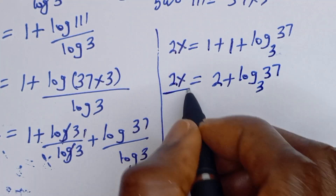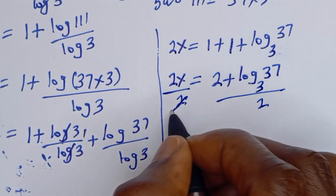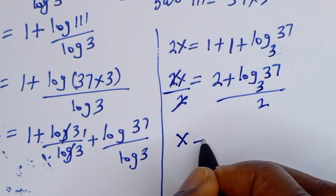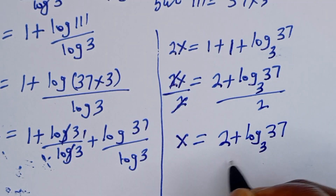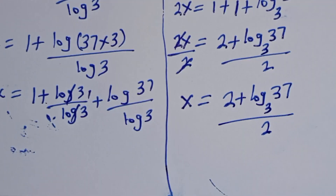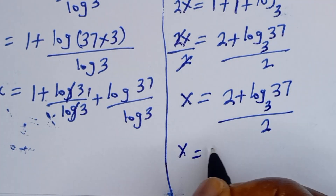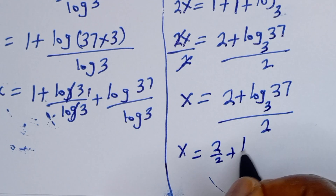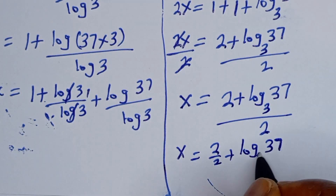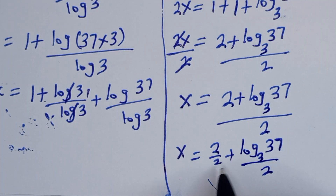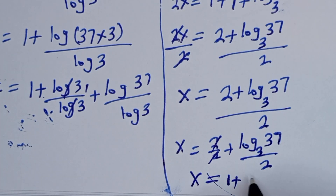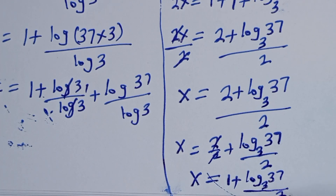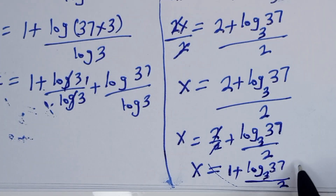We are looking for the value of S, so divide both sides by 2. This cancels, giving S is equal to 2 plus log₃(37) over 2, which simplifies to S equals 1 plus log₃(37) over 2. And this is the final answer.